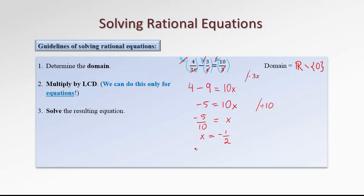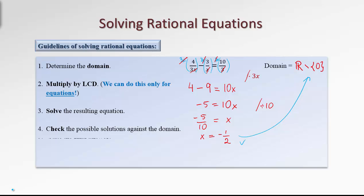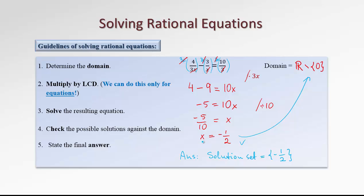Is that all we need to do? Not quite. We need to check our possible solution against the domain. We look at our solution and check: is negative 1 half in all real numbers except for 0? Yes, it is. So that's our true solution. Finally, we state our answer: the solution set equals {negative 1 half}. We can write it that way or simply say x equals negative 1 half, but show in your work that you checked against the domain and confirmed this is the true solution.